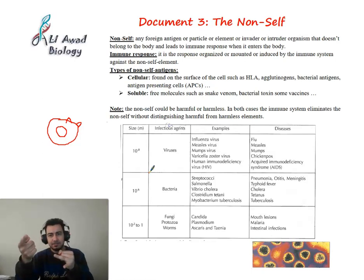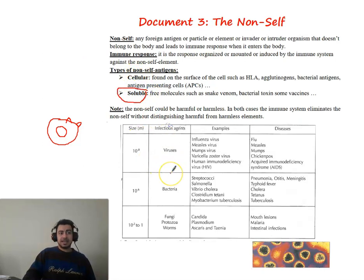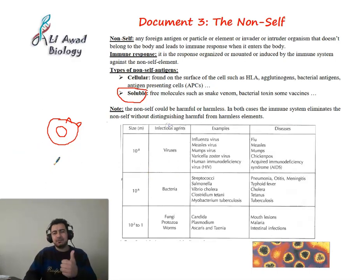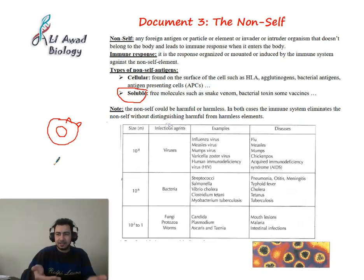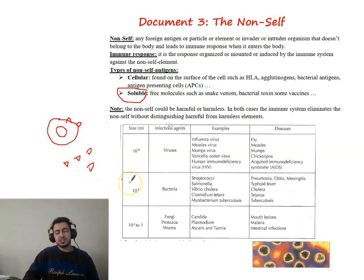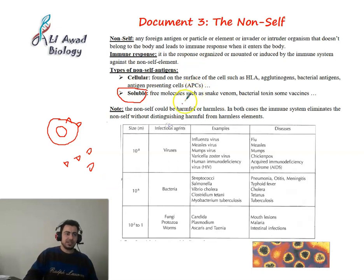HLA antigens on nucleated cells are cellular antigens, as are bacterial antigens and viral antigens. However, soluble antigens are antigens which are not fixed to cells - they are not found on the surface of cells but are soluble in the blood. Some vaccines are soluble antigens.